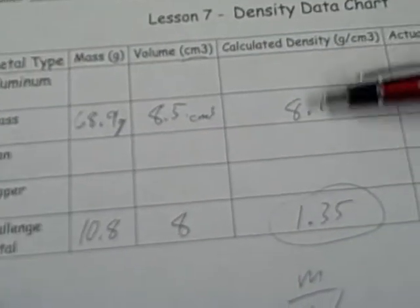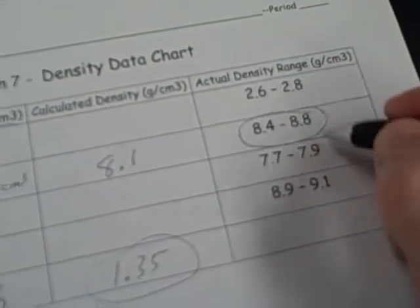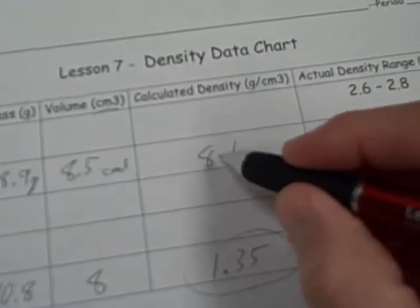See how close you get. If you're way off, you might want to retry to see where you went wrong, but try to get fairly close. This is the actual range that professional scientists get. You might get something close.